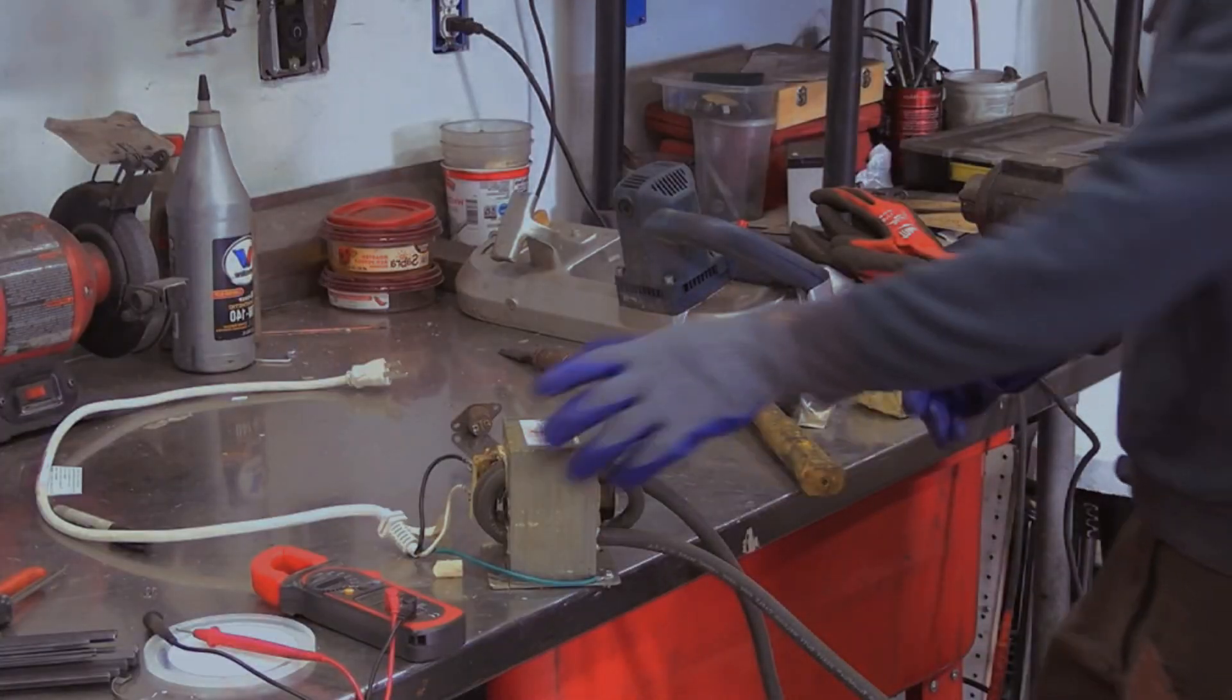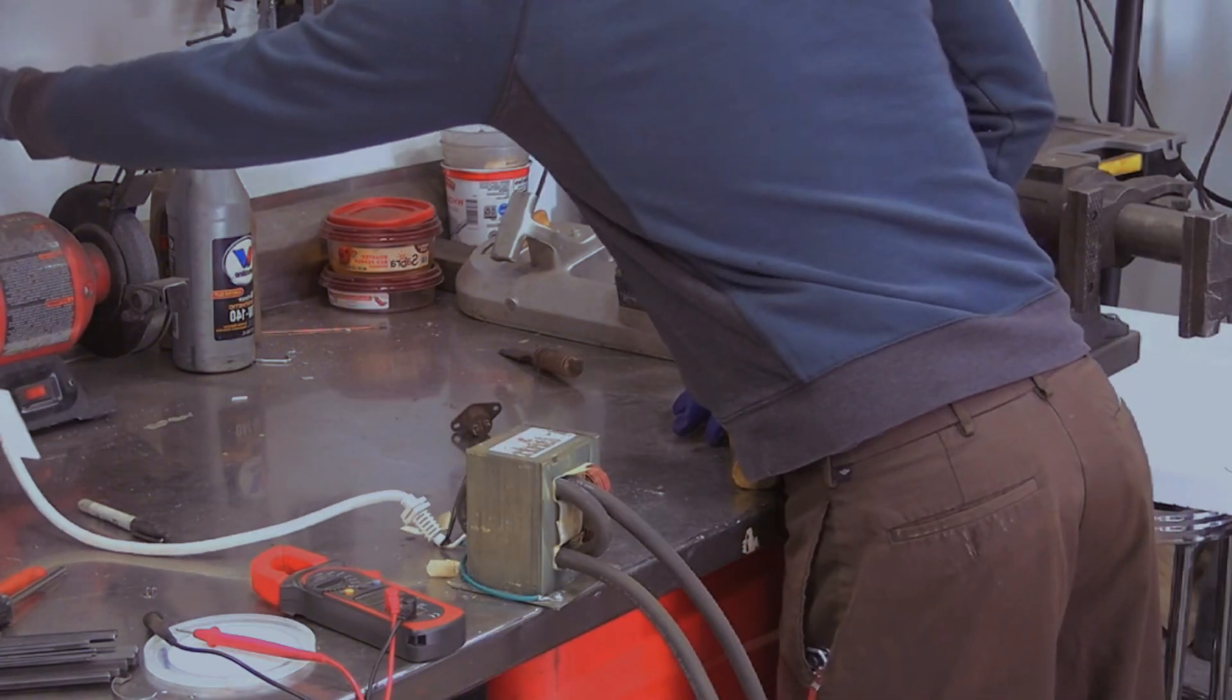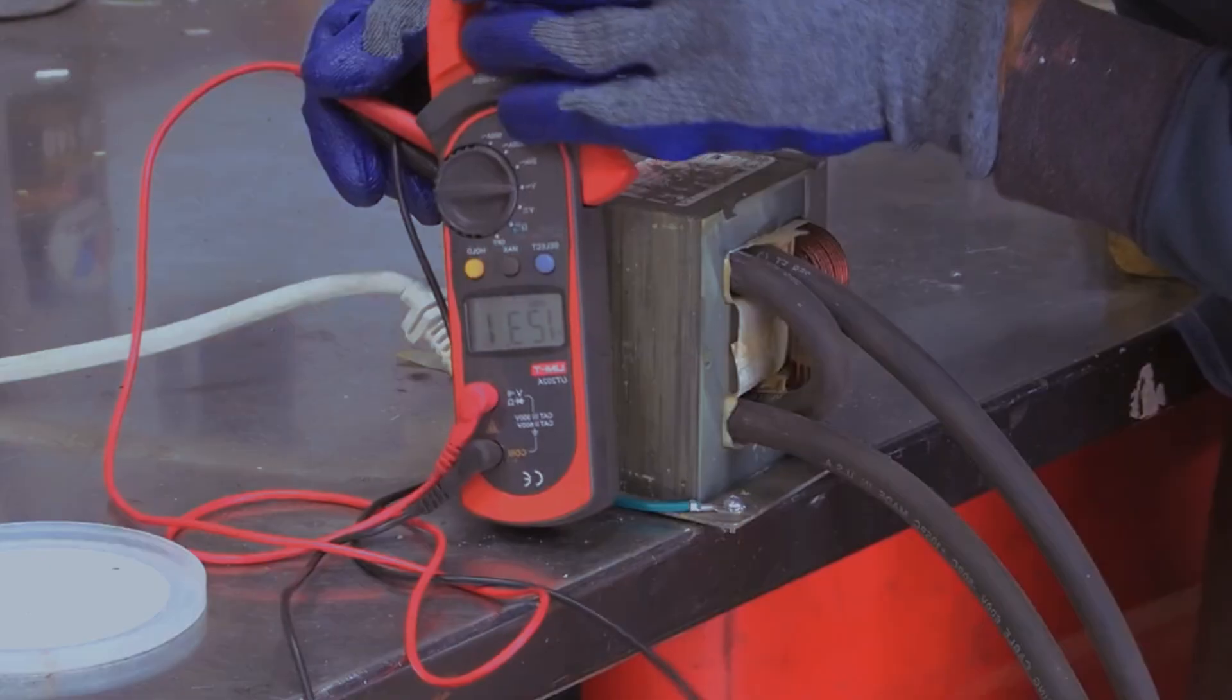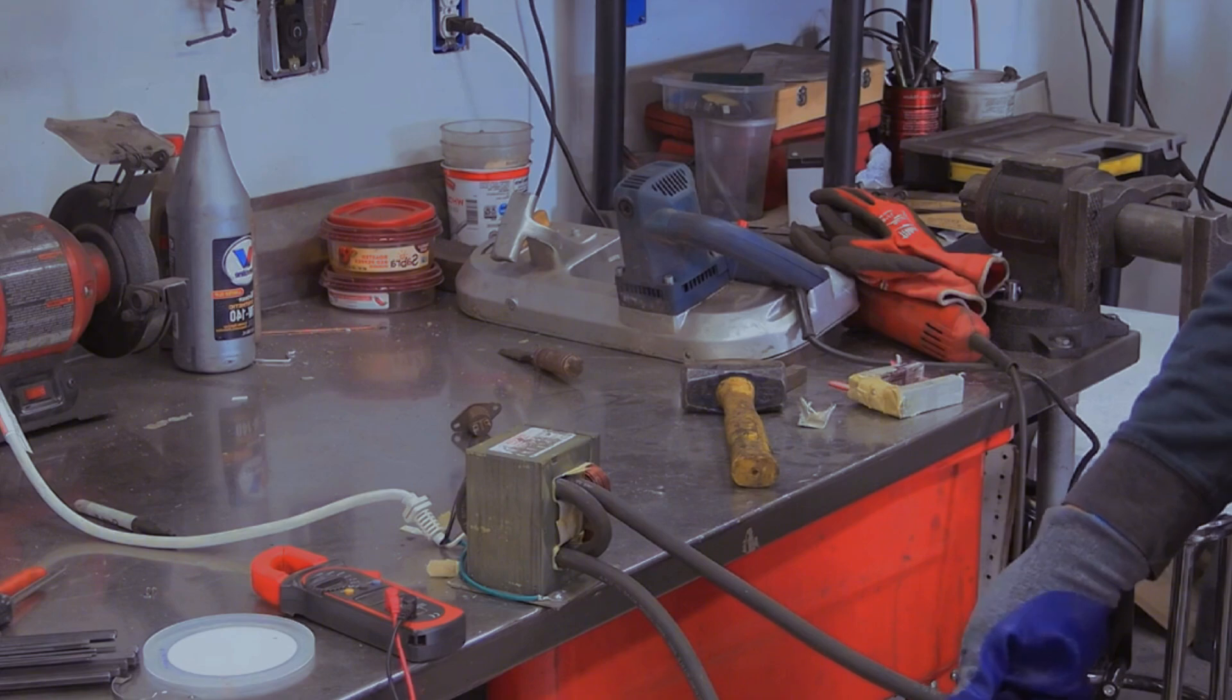The electrodes are used to apply pressure and current to the metal pieces at the spot where they are to be joined, and the current creates enough heat to melt and fuse them together.